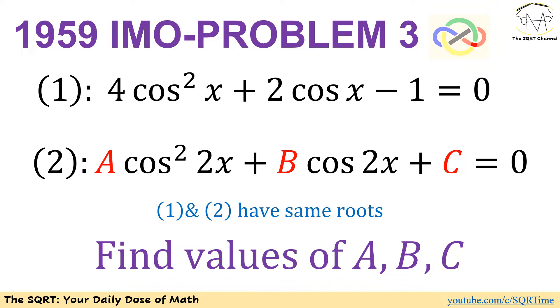Here we are going to have two equations. The first equation says we have 4 cosine of x to the power of 2 plus 2 cosine of x minus 1 is equal to 0. For the second equation we have A cosine squared of 2x plus B cosine of 2x plus C equals to 0. We want to have the same roots for equation number 1 and equation number 2. Based on that we need to find values of A, B, and C.